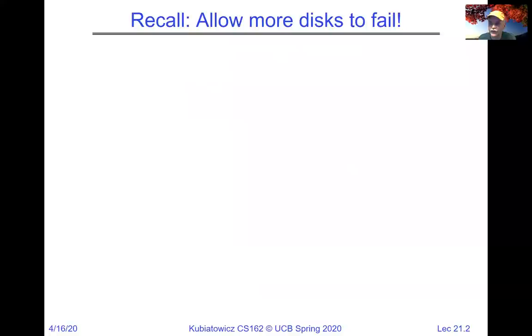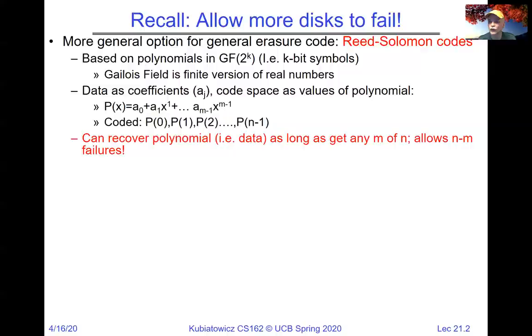Before we go there, I wanted to remind you of a discussion we were having about RAID as a simple option to account for disk failures, and then a more general option called Reed-Solomon codes, which are very much like polynomial fitting. With Reed-Solomon codes, we can decide an arbitrary amount of redundancy. We can set up something almost like a hologram where we send out n little fragments, and as long as we get any m back, we can reconstruct the data, which can make it extremely hard to destroy.